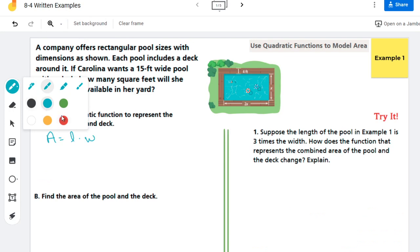So my expression for my length is going to be the 2x from the actual pool. And then I'm going to go ahead and add eight to it, because I have the 4 feet here and the 4 feet here. And my width for this pool is x for the pool and then 4 feet here and 4 feet here. So a total of eight feet being added for the deck.